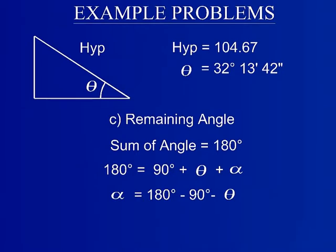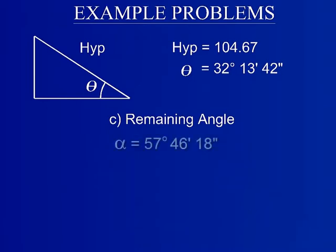In this example, the lowercase Greek letter alpha is used to symbolize the remaining angle. To find the remaining angle, subtract the known angles from 180 degrees. The remaining angle of this triangle is 57 degrees, 46 minutes, and 18 seconds.